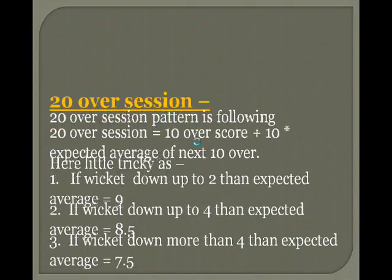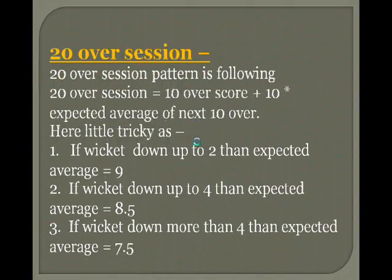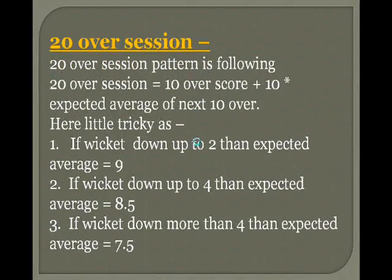20-over session pattern: 20-over session equals 10-over score plus 10 multiplied by expected average of next 10 overs. Here it is a little tricky — if wickets down up to 2, expected average is about 9 runs per over; if wickets down up to 4, expected average is about 8.5 runs per over.